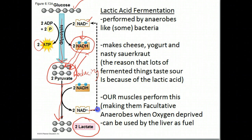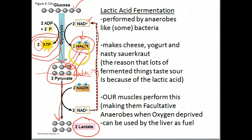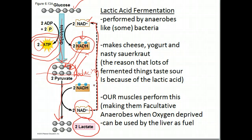Once freed, those NAD+ molecules can then go back to start the cycle all over again, each time repeating two ATP and getting more energy. So up until here it's pretty much the same thing, except now we're reducing pyruvate with those electrons, thereby freeing up NAD+ to go back and repeat the process. It's not a very robust energetic system — you're not creating a lot of ATP — but you can keep doing this over and over again, and you get the product lactate.